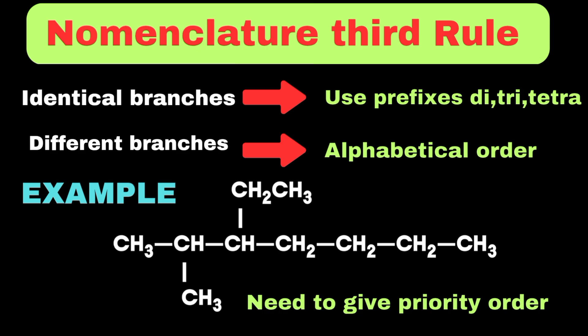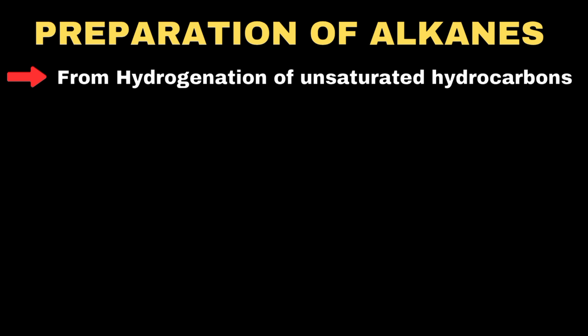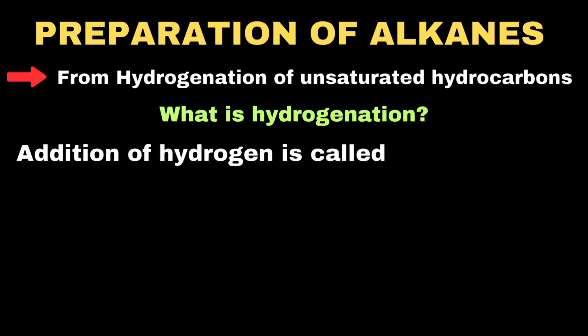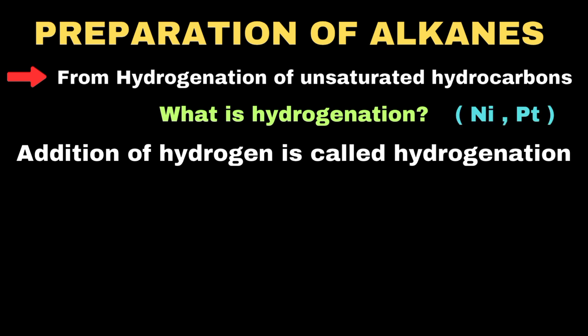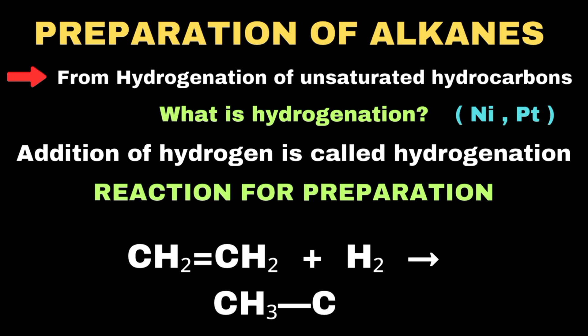Let's move towards the preparation of alkanes. Alkanes can be prepared from the hydrogenation of unsaturated hydrocarbons such as alkenes and alkynes. Hydrogenation refers to the addition of hydrogen, done in the presence of catalysts such as nickel and platinum. For example, ethene reacts with one mole of hydrogen, breaking the carbon-carbon double bond to form ethane.